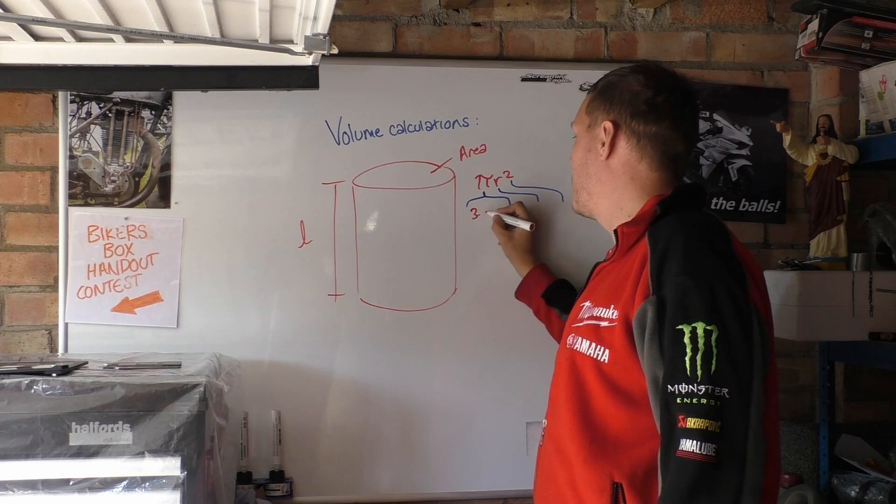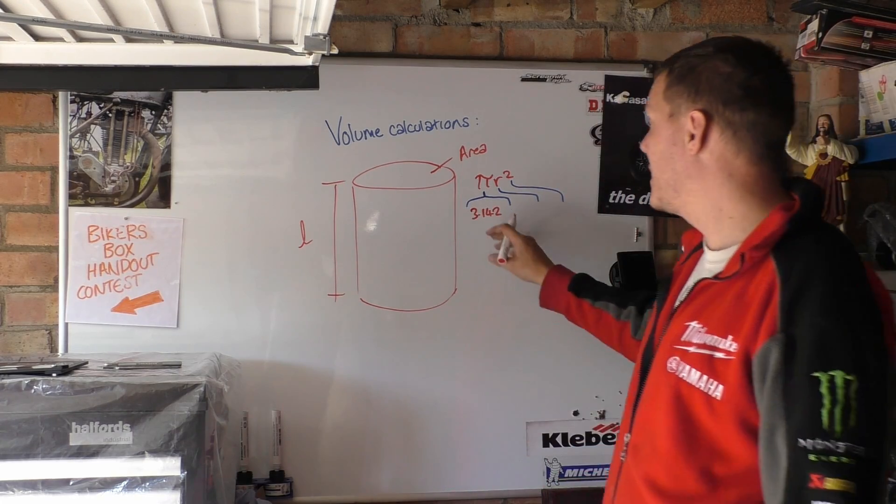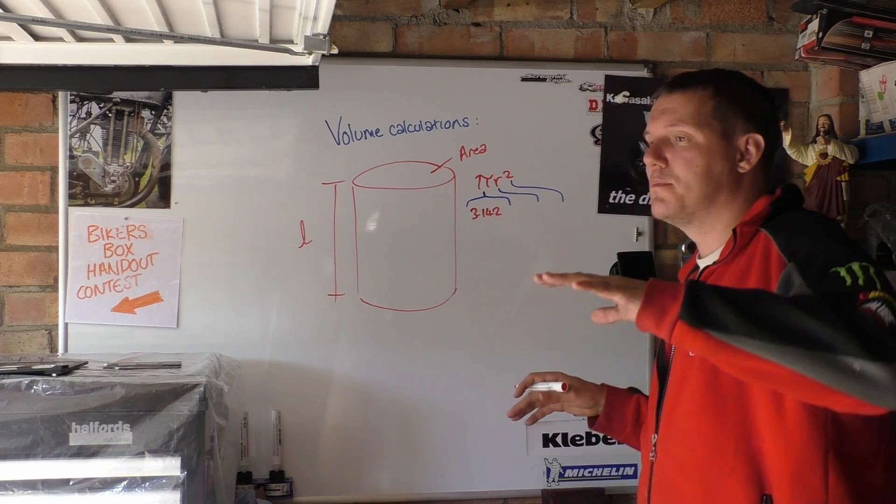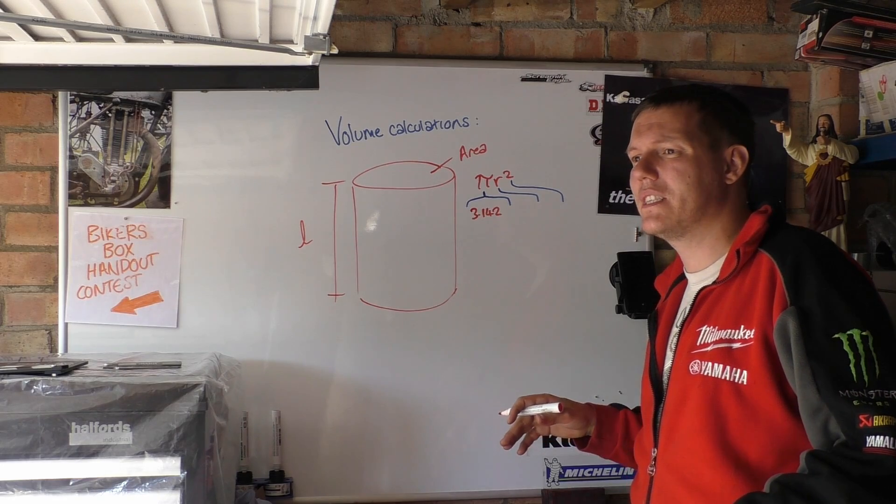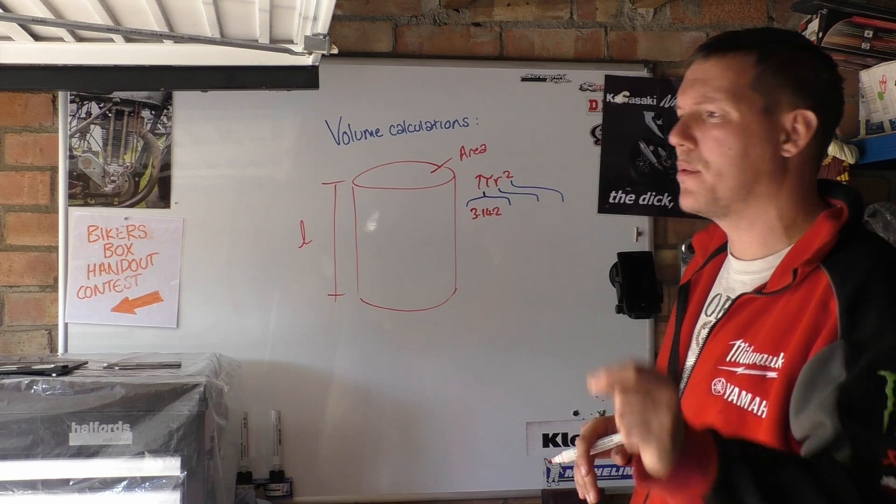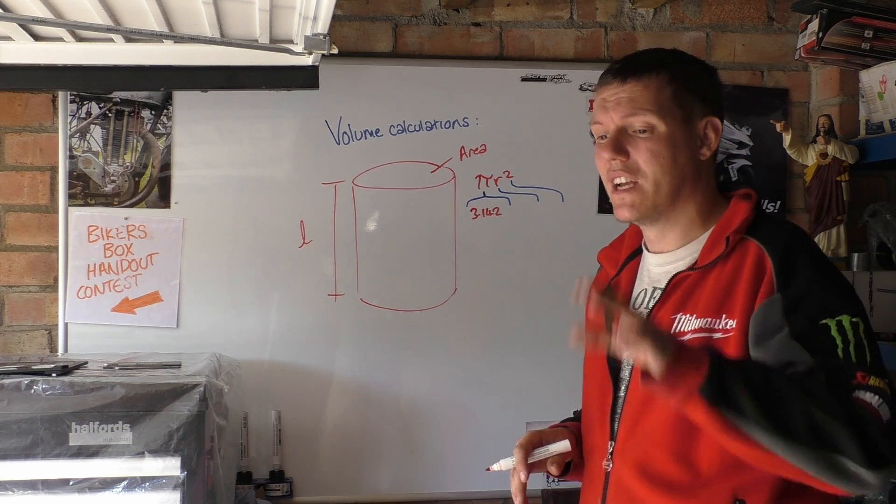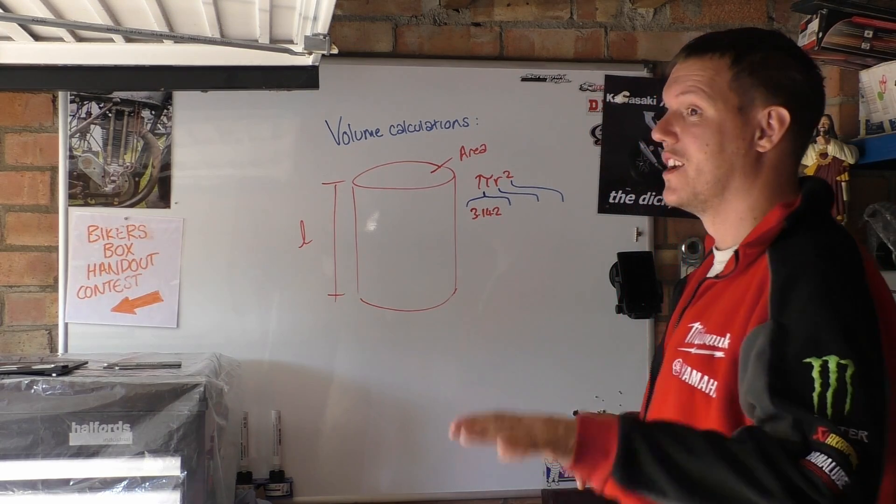So your pi is 3.142. You do not need anything more accurate than that ever. You can even get away with 3.14. The reason why is because pi to 18 decimal places is the circumference of the observable universe down to the size of a proton. So when you think about it like that, you're measuring a cylinder. You do not need anything more than three decimal places.